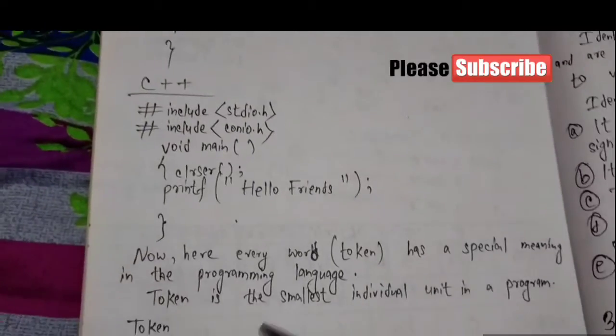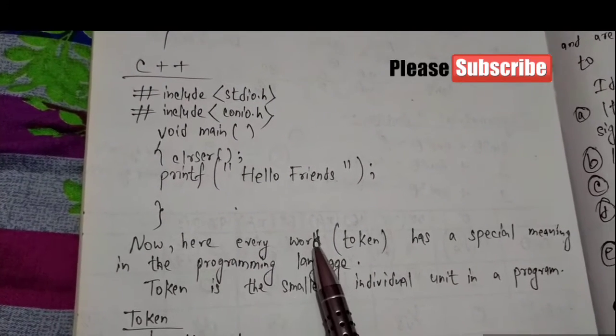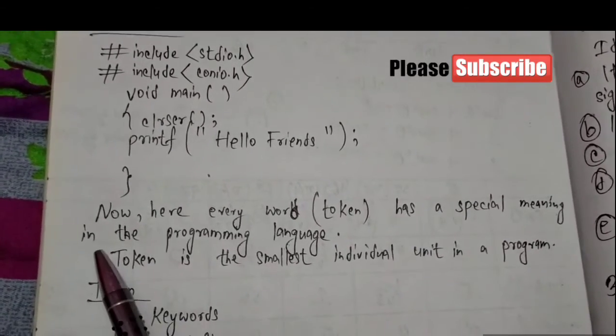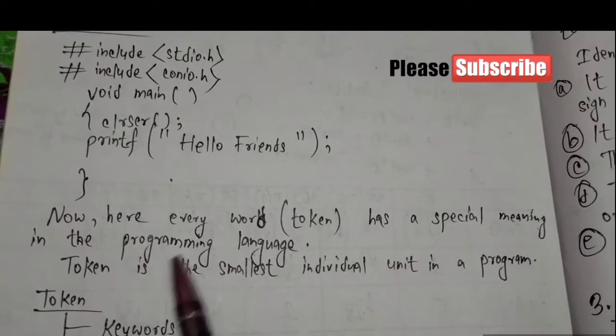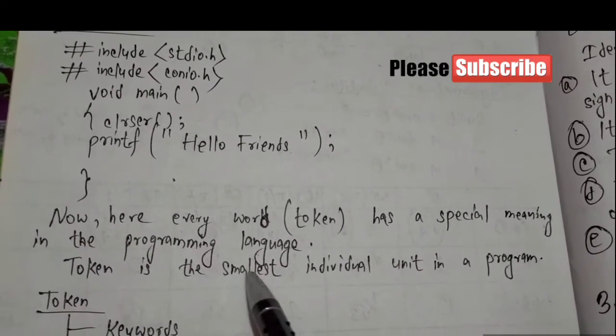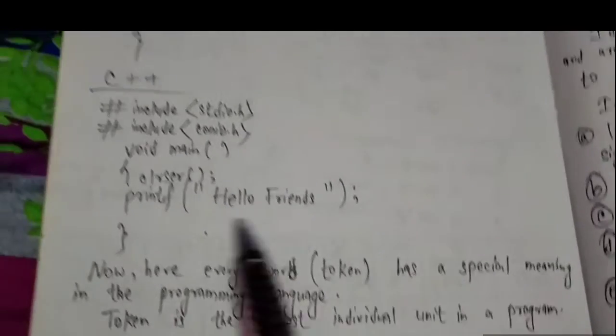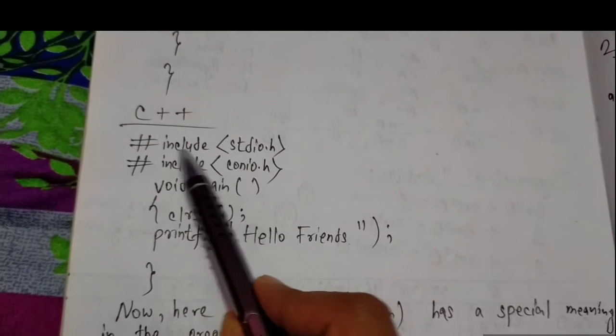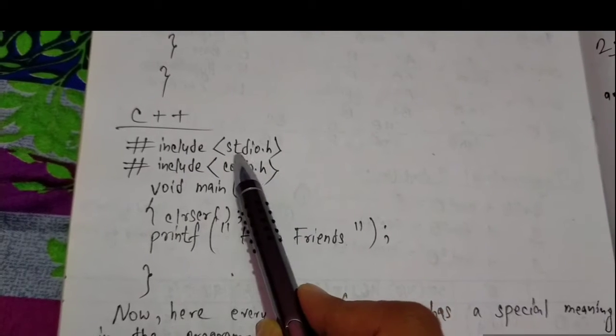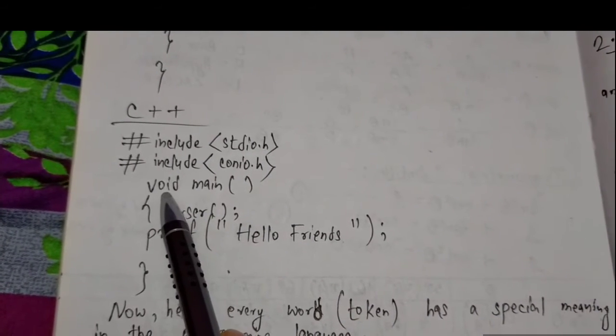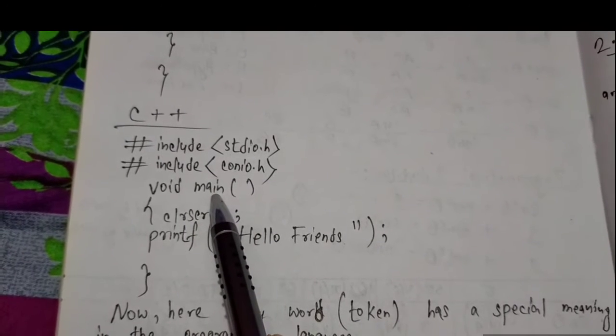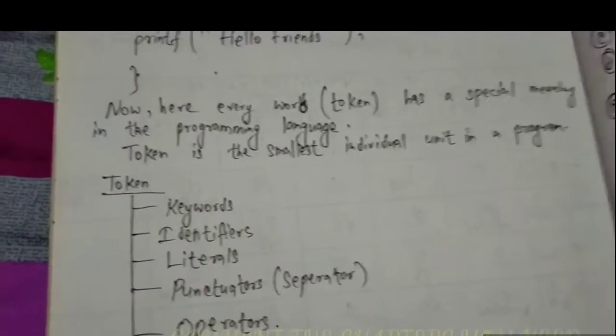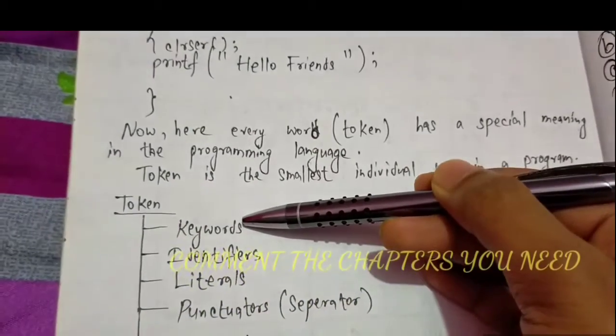Every word in the program is a token. That means it has a special meaning given in the programming language. Token is the smallest individual unit in a program. If we write a program, this is the individual unit - any word that has a special meaning in the programming language. Tokens are of five types.